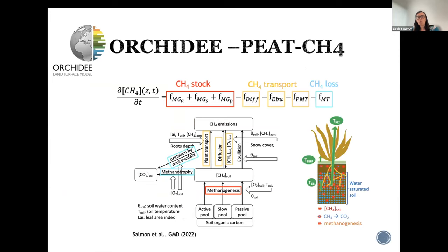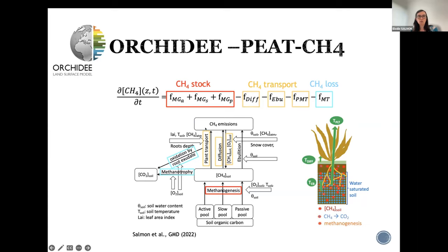The methane model takes the soil carbon, and methane production from those carbon pools is estimated. That stock of methane can then be oxidized into CO2 or emitted to the atmosphere. The flux from the soil to the atmosphere is represented with equations for plant transport, diffusion, and ebullition.